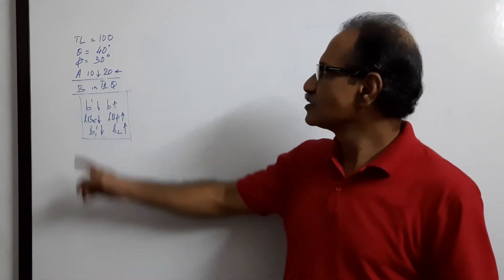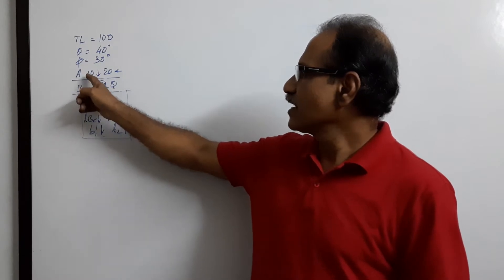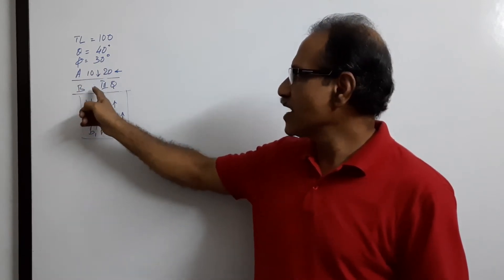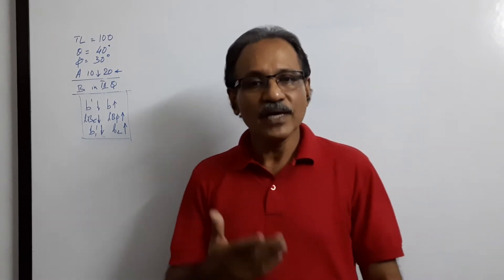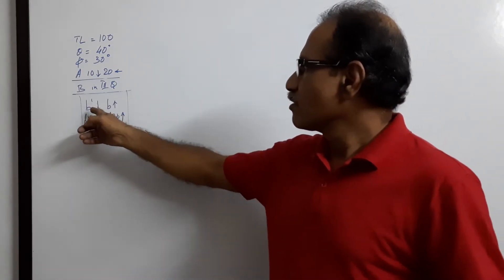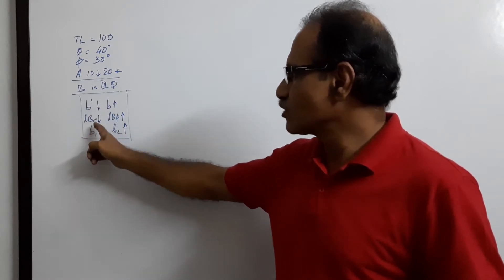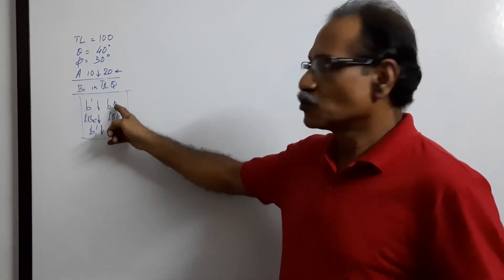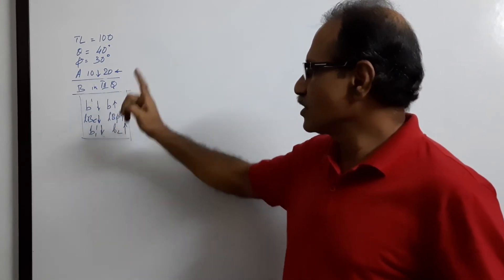Another session: line AB, length 100, theta 40, angle 5 is 30. Both A and B are in the third quadrant — below HP and behind VP. When B is in the third quadrant, the elevation will be below XY, so lb will be below. b1-dash will be below, but small b is above, and lbp is above.